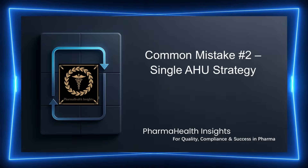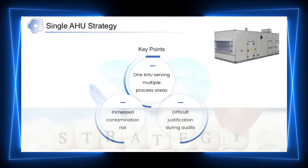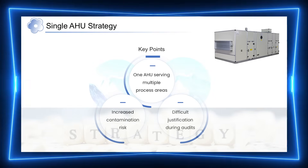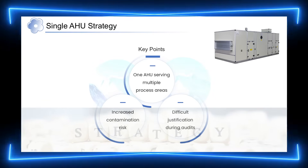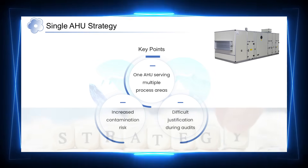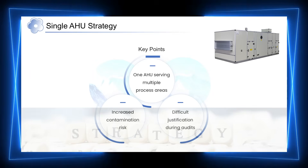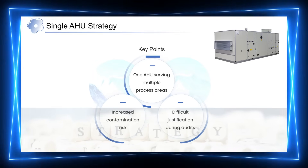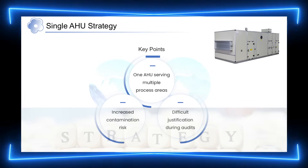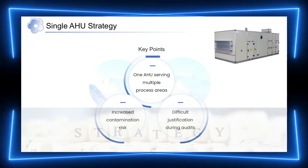The next mistake often arises from cost optimization. In many facilities, a single AHU is used to serve multiple manufacturing or support areas as a cost-saving or space-saving measure. While this may appear efficient from an engineering perspective, it creates challenges from a GMP standpoint. When different processes with different risk profiles are handled by one AHU, the potential for cross-contamination increases. During audits, justifying such a configuration becomes difficult, especially when clear segregation and risk control cannot be demonstrated.